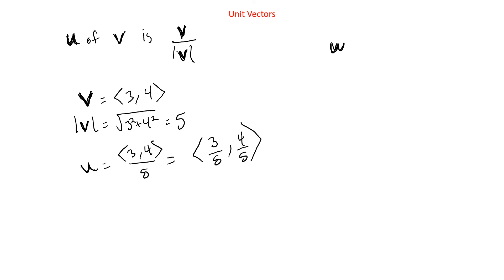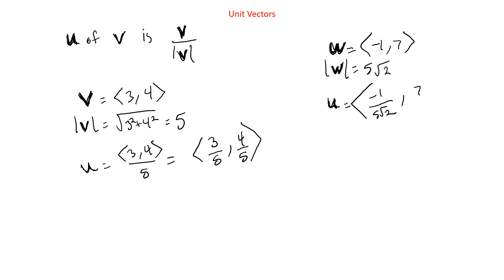If we had w = ⟨−1, 7⟩, which has magnitude √50 = 5√2, the unit vector would be ⟨−1/(5√2), 7/(5√2)⟩, or factored as (1/(5√2))⟨−1, 7⟩. You can rationalize the denominator if you want — ⟨−√2/10, 7√2/10⟩ — but you generally don't need to.